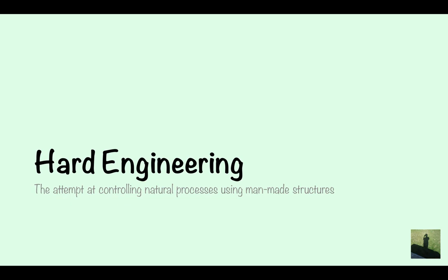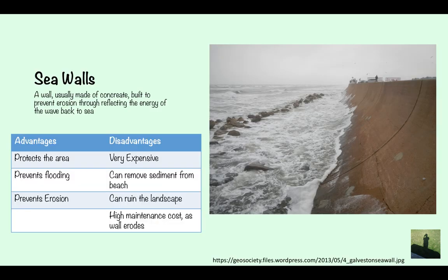Hard engineering is an attempt at controlling natural processes using man-made structures. The first type is sea walls — usually made of concrete and built to prevent erosion by reflecting the energy of the wave back to sea. Advantages: good at protecting the area, prevents flooding and erosion. Disadvantages: very expensive, can remove sediment from the beach, can ruin the landscape, and has high maintenance costs, because once the wall erodes it will need to be repaired, which is very expensive.